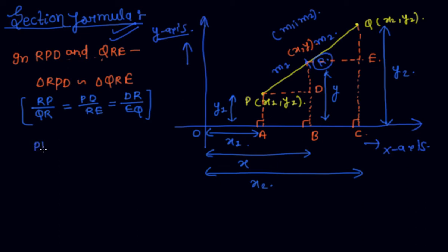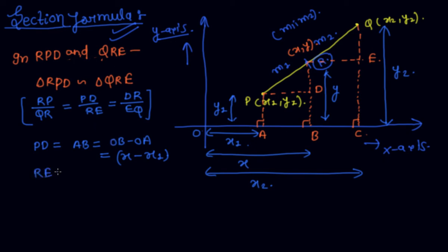First, PD = AB = OB minus OA = x minus x1. Next, QE (which is BC) = OC minus OB = x2 minus x.